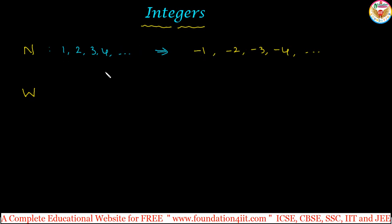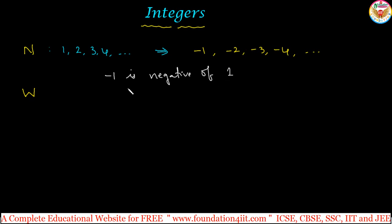If you notice minus 1, you can read this number as 'negative 1' or 'minus 1.' This is the negative of plus 1. Generally we do not keep the plus symbol, so if there is no sign, it is positive 1. So minus 1 is the negative of positive 1 — that means minus 1 is the negative of 1. Same way, minus 2 is the negative of 2.